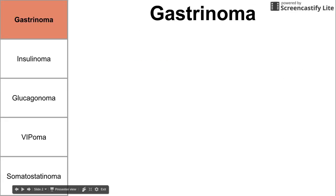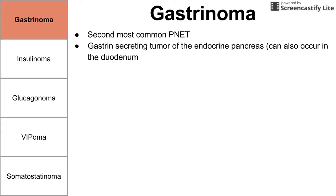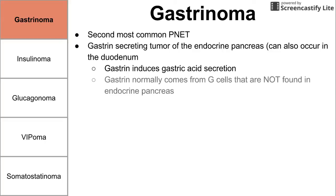Let's start talking about gastrinoma. Gastrinoma is the second most common PNET. By definition, it is a gastrin-secreting tumor of the endocrine pancreas, and it can also occur in the duodenum in the GI tract. Gastrin is a hormone that induces gastric acid secretion.